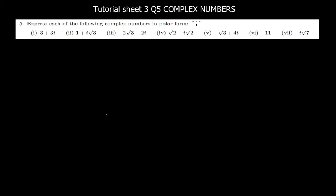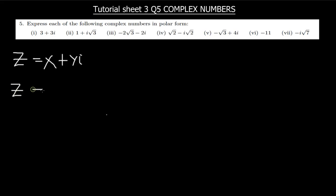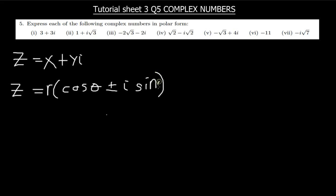If we have a complex number in rectangular form, z = x + iy, and we need to express it in polar form, it should look like this: z = r(cosθ + i sinθ). This is the polar form of a complex number.